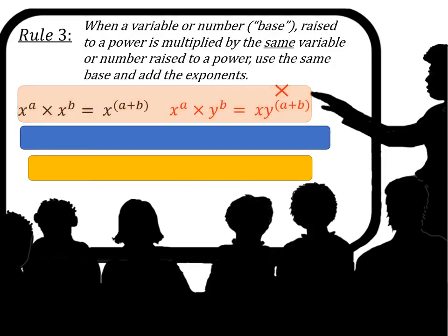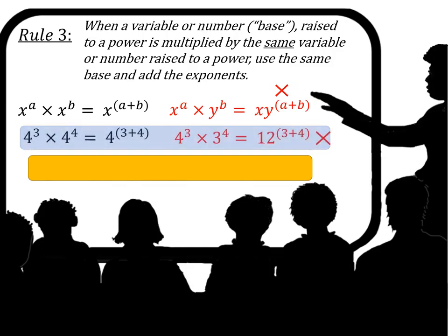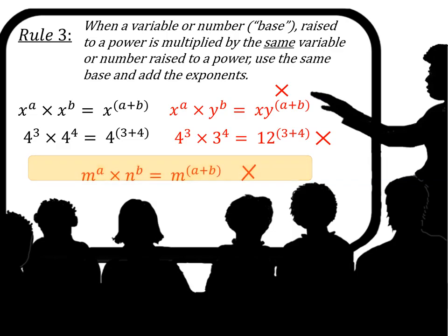Rule 3: when a variable or number — the base — raised to a power is multiplied by the same variable or number raised to a power, use the same base and add the exponents. So x to the a times x to the b, with the same base x, equals x to the a plus b.